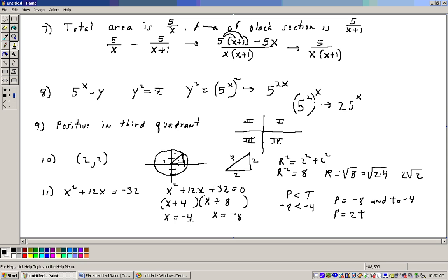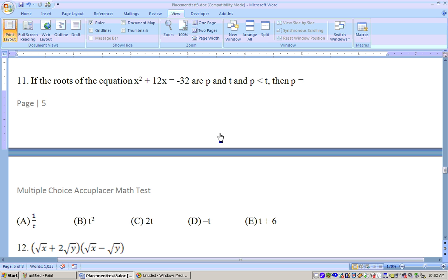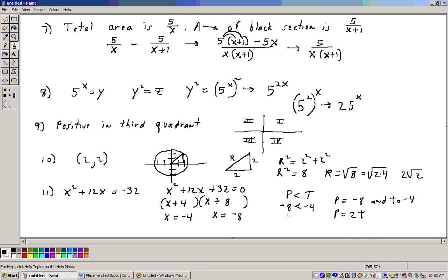Now on that problem, so that's the solutions, but on that problem it says that p is less than t. Well, what number is less than the other number? Well, negative 8 is less than negative 4. So therefore, if p is less than t, then your p must be negative 8 and your t must be negative 4. Now if you check the choices on here, it asks what does p equal? And one of them is 2t. And if you take 2 times negative 4, you will get negative 8. So the right answer to that problem is p equals 2t.